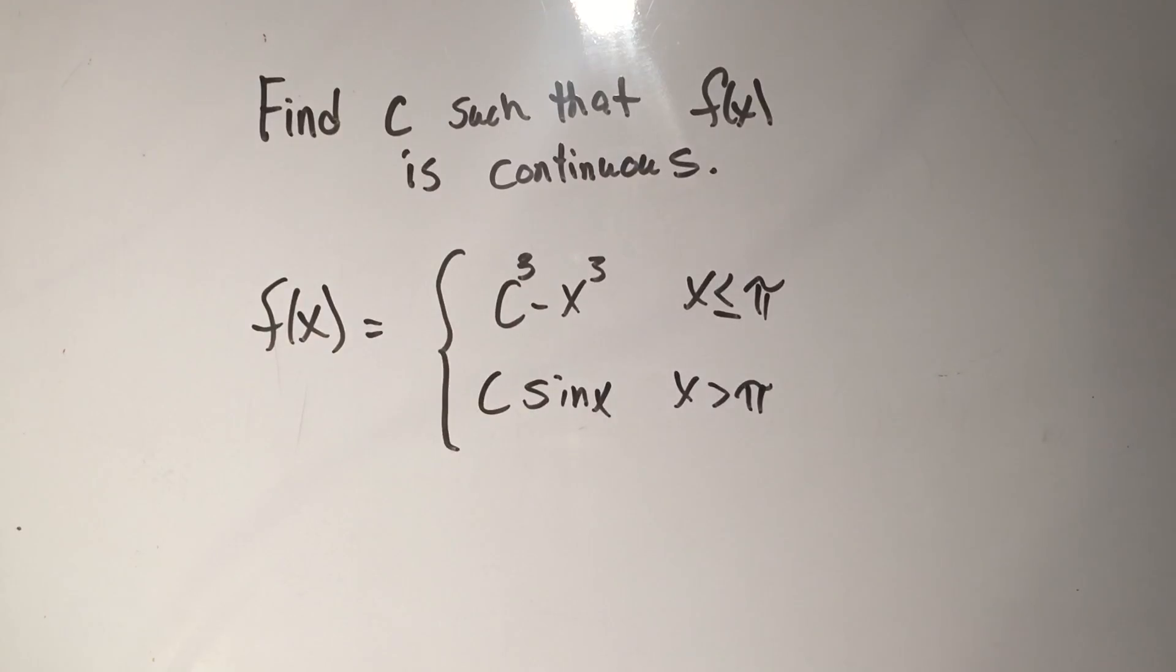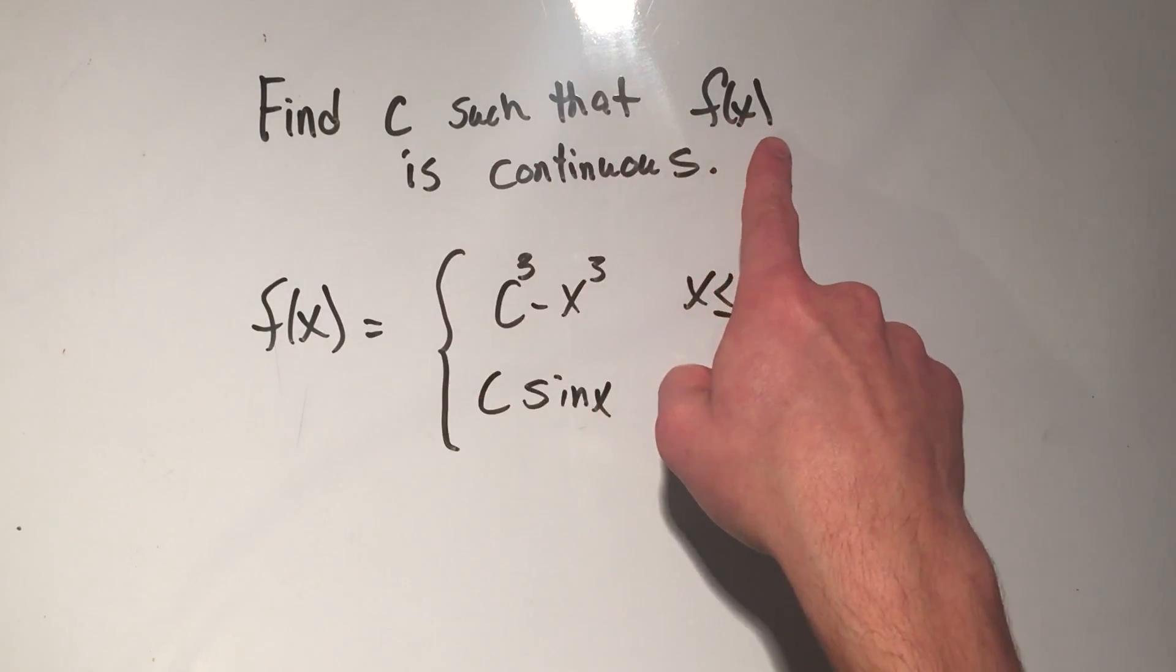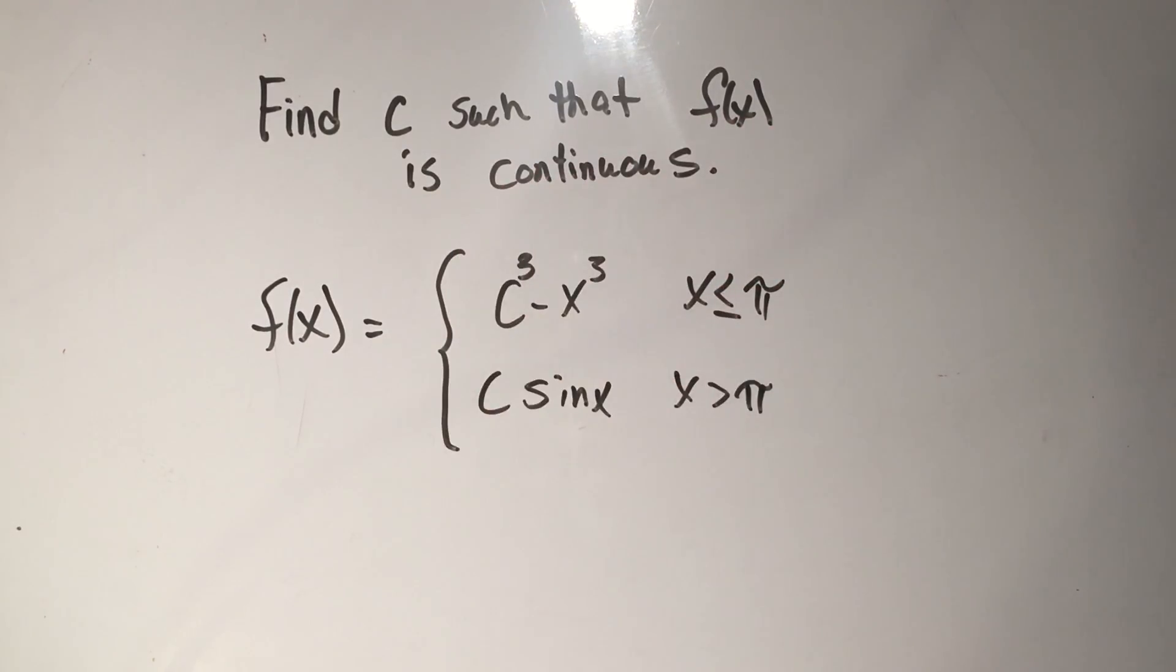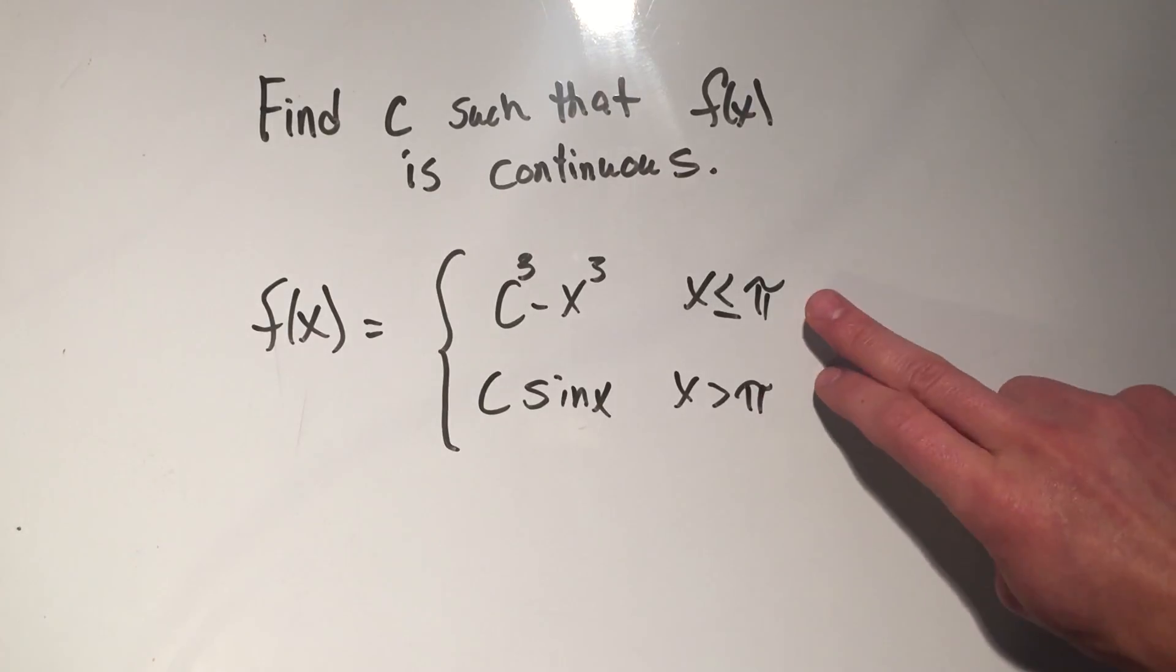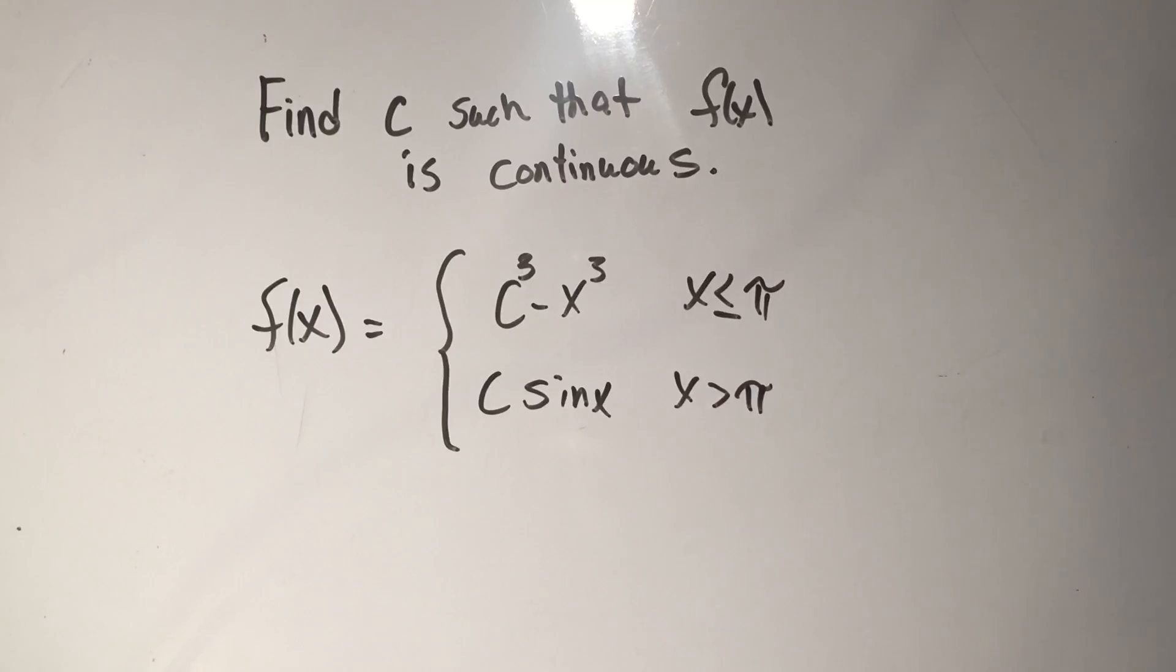It says find c, where c is a constant, such that f of x is continuous. So I've got this piecewise function, which means there might be a discontinuity, well in fact there might be a jump discontinuity at x equals pi.